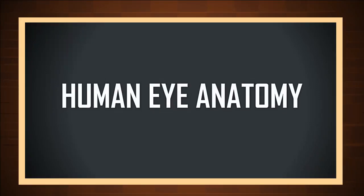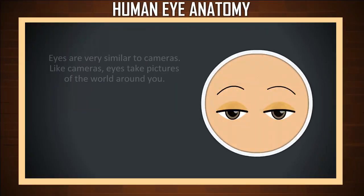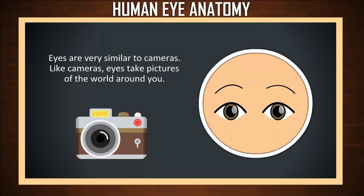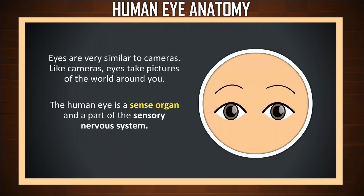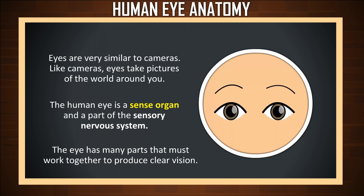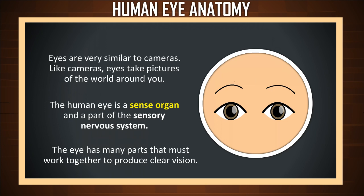Human Eye Anatomy. Eyes are very similar to cameras — like cameras, eyes take pictures of the world around you. The human eye is a sense organ and a part of the sensory nervous system. The eye has many parts that must work together to produce clear vision. In this video, we will discuss about them.